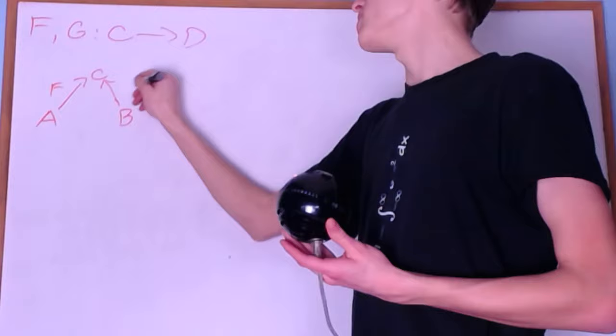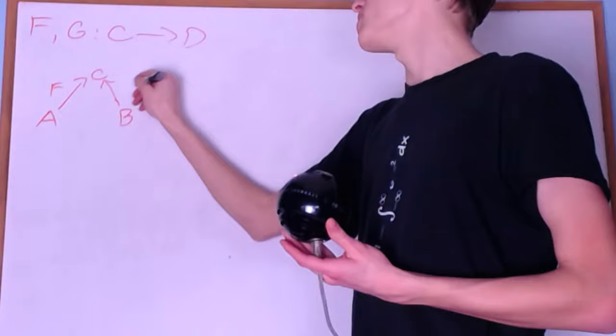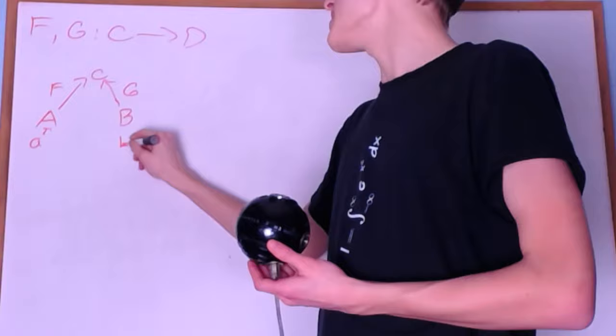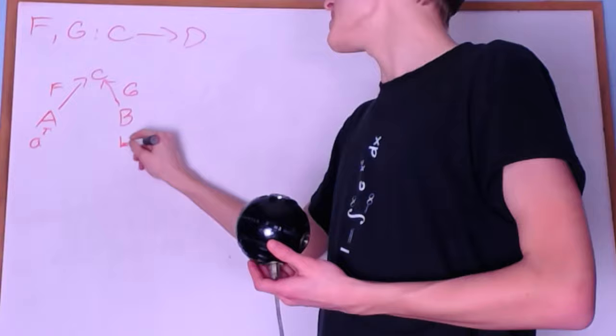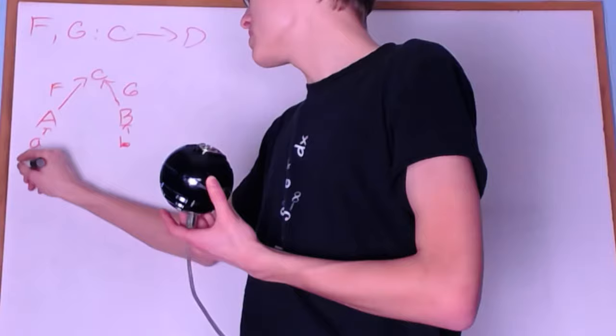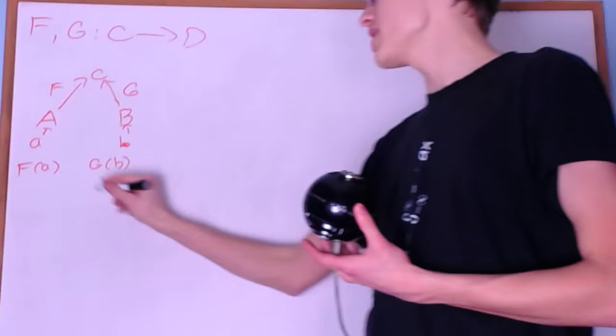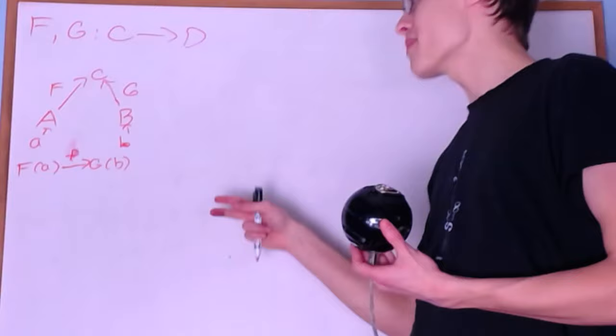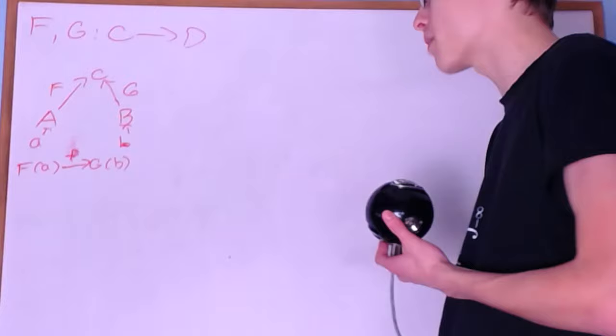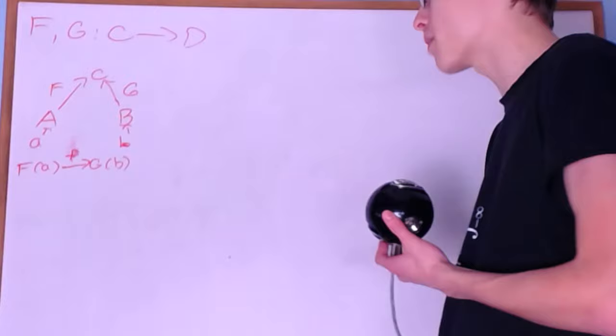So we have functors F and G. Let's say we have an object A of category A and an object B of category B. The way comma categories work is that we compare F of A and G of B — what is their relation? In category theory, the only way to talk about their relation is through arrows, so we just have an arrow between them. This is what we analyze in comma categories: the morphisms between the two functors' outputs, which allows us to compare the functors.